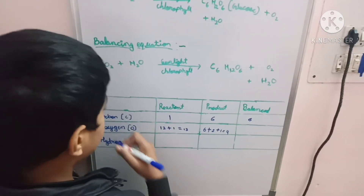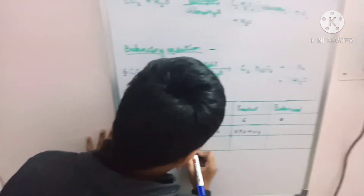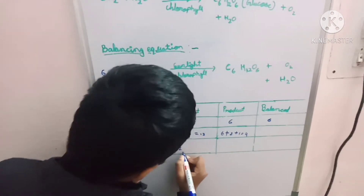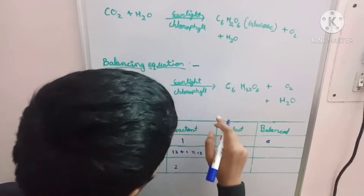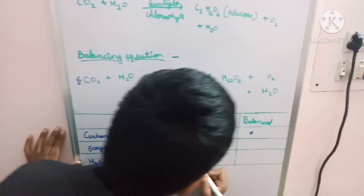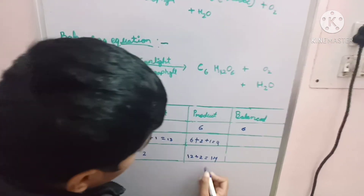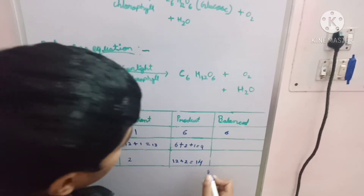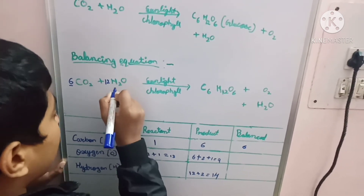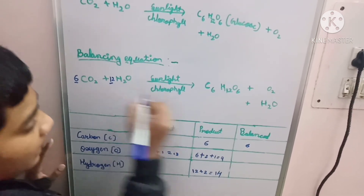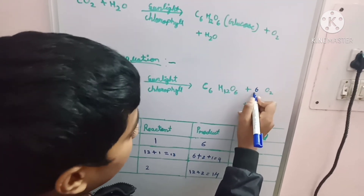On the reactant side there are only two hydrogens. On the product side, 12 plus 2 equals 14 hydrogens. To balance hydrogen and oxygen, we place 12 in front of H2O on the reactant side, and on the product side we place 6 in front of O2 and 6 in front of H2O.